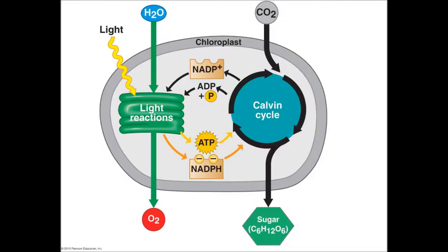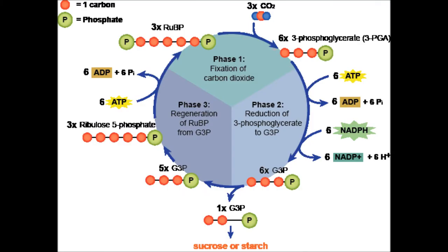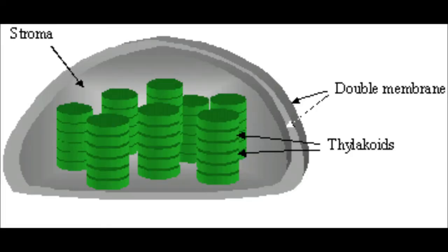The ATP and NADPH created in the light reactions travels through the Calvin cycle. This is the Calvin cycle, also known as the light-independent reactions that happens in the stroma of a chloroplast.